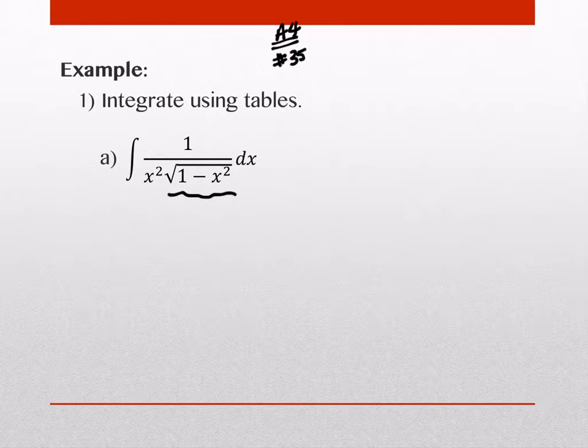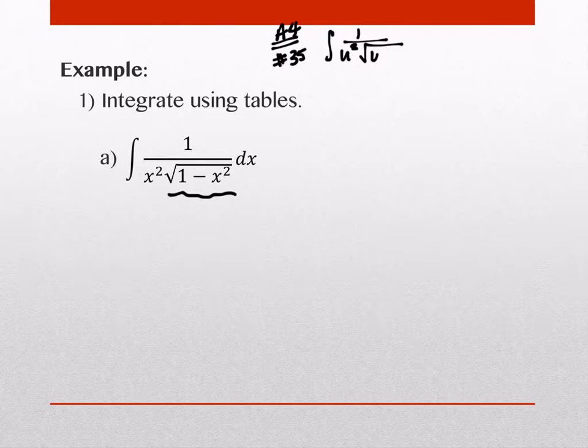Number 35 says this. It looks like the integral of 1 over u squared square root of u squared. Oh, wait. I think I got the wrong one because ours is subtraction with the variable second.